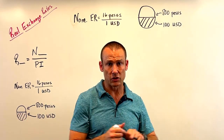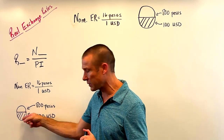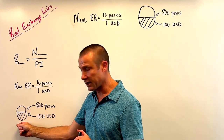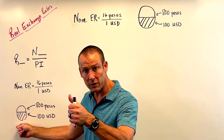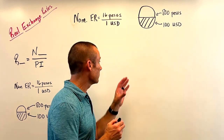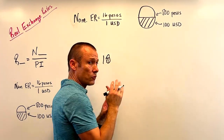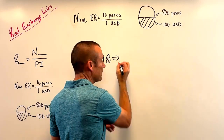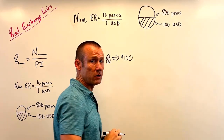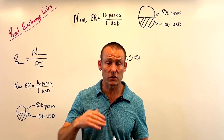Let me show you conceptually how we find the real exchange rate — remember, it's goods and services exchanging for goods and services. I'm going to start with a market basket, and I'm going to sell it in the United States. What am I going to get? One hundred USD. So I've got this market basket, I sell it in the United States for $100.